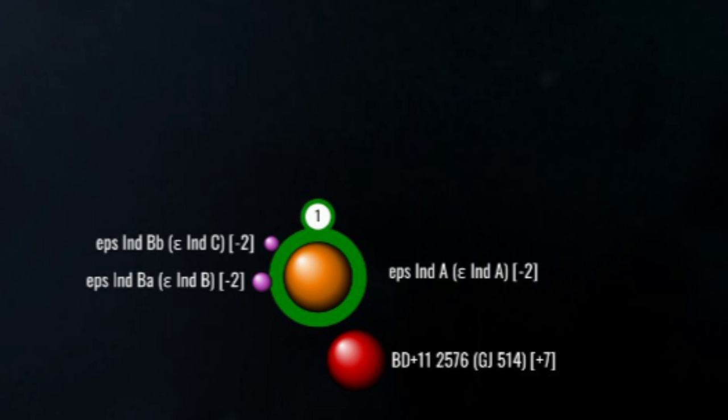As a refresher, its system comprises Epsilon Indi A, a K-type star about 80% the mass, 20% the luminosity, and 70% the age of the sun, orbited at a distance of roughly 1500 AU by Epsilon Indi B, a binary of two brown dwarfs between 50 and 70 times the mass of Jupiter.